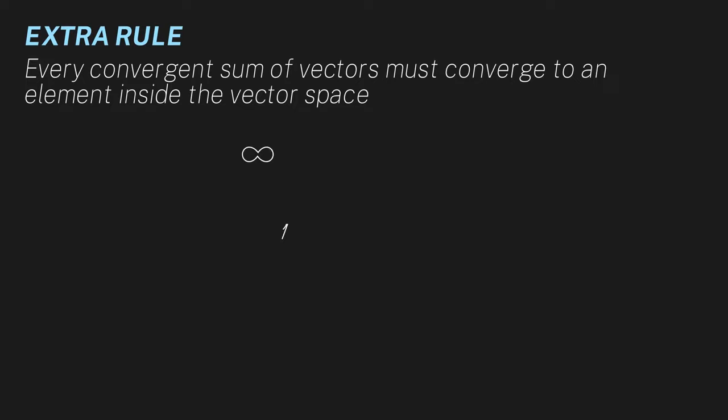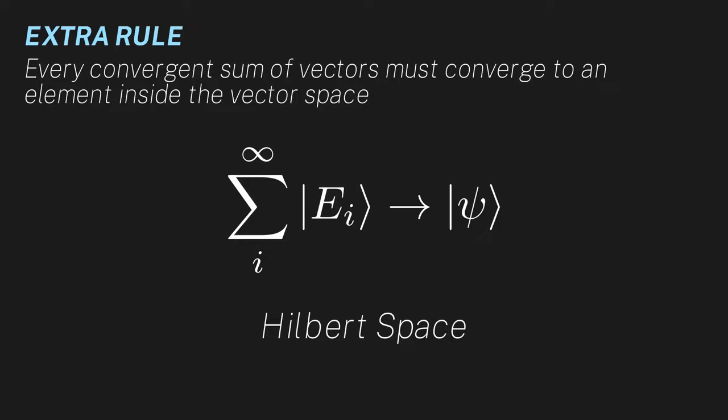So, how do we solve this problem? Well, this is our mathematical theory, so let's place an extra rule on our quantum vector space. A rule that says that every convergent sum of vectors must converge to an element inside our vector space. I know it sounds silly, but we're allowed to add this condition. You might not believe it, but what we have described is actually just a Hilbert space.